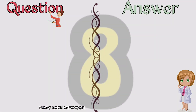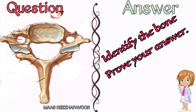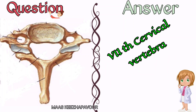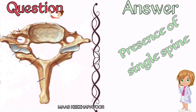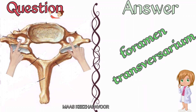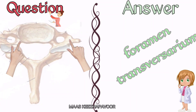Shall we move on to the last question? Identify the given bone and prove your answer. The given bone is the seventh cervical vertebra. Presence of the single spine and foramen transversarium prove that this is the seventh cervical vertebra.